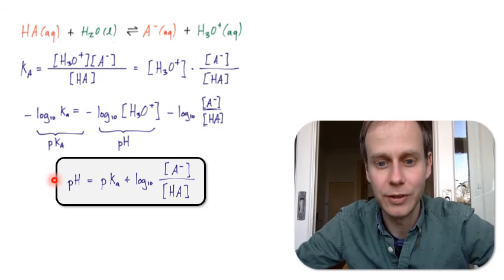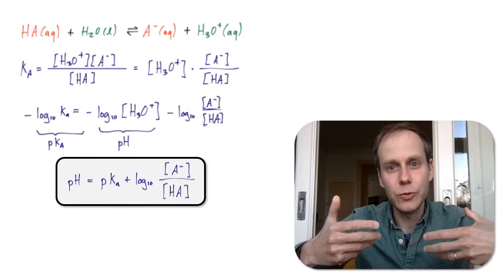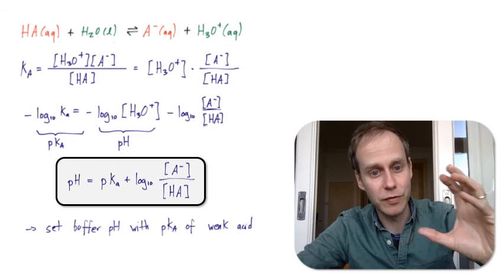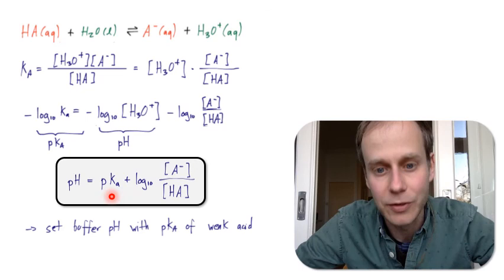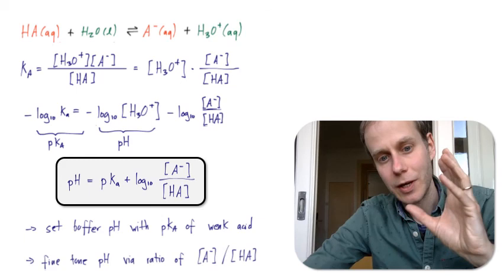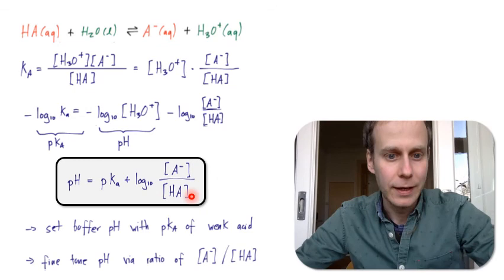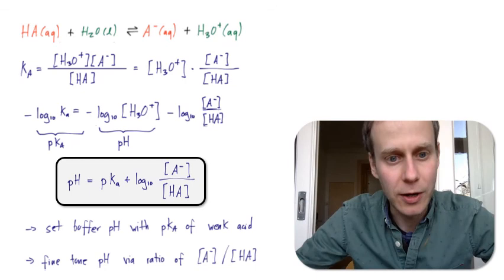The Henderson-Hasselbalch equation shows how you can control the pH with a buffer. The overall buffer pH is set by the pKa value of the weak acid. You can then fine-tune the pH with the ratio [A⁻]/[HA], which gives a range of roughly plus or minus one pH unit around the pKa — which, as you recall, is the pH where 50% of the weak acid is dissociated.